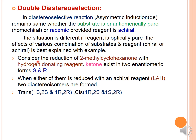Consider a reduction reaction with 2-methylcyclohexanone as the substrate and a hydrogen-donating reagent like lithium aluminum hydride (LAH). The ketone can exist in two enantiomers — S and R forms. When reduced with an achiral reagent like LAH, you result in two diastereomers: trans and cis. In the trans form, you have 1S,2S and 1R,2R configurations. In the cis form, you have 1R,2S and 1S,2R. SS is the diastereomer of SR/RS, and RR gives RS/SR as its diastereomer.